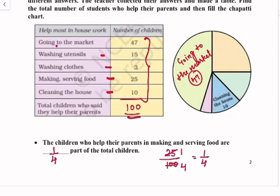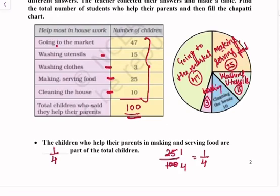Then 25, this part shows making and serving food - 25. Then this part for washing utensils, and the number is 15. And the smallest part is showing the washing clothes part, number 3. We will write washing clothes.